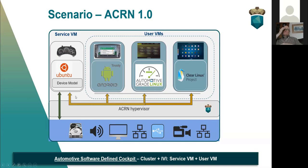ACRN also provides an advanced HyperDMA graphics buffer sharing mechanism between the user VM and the service VM through a HyperDMA solution — we use HyperDMA to share graphic memory between the user VM and the service VM. If you are familiar with data center hypervisors, the ACRN architecture is a little like Xen. But the difference is that Xen runs its service domain in root mode, while ACRN runs its service domain in a VM.